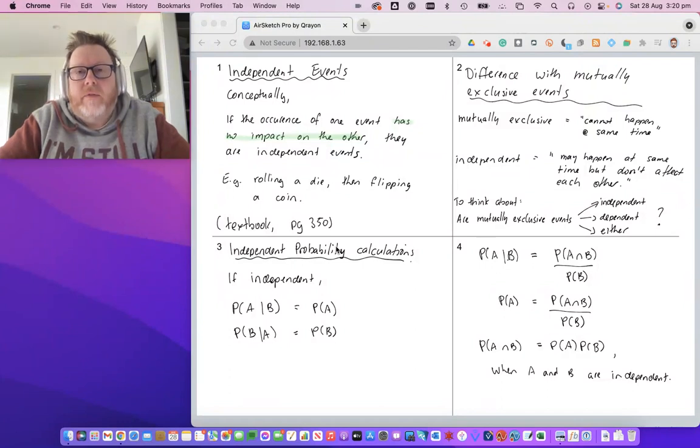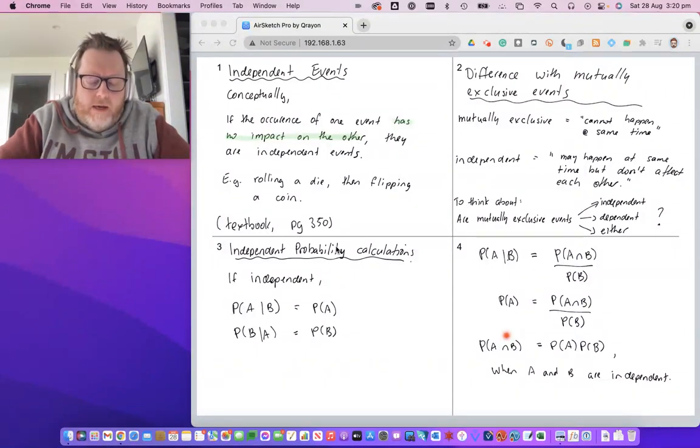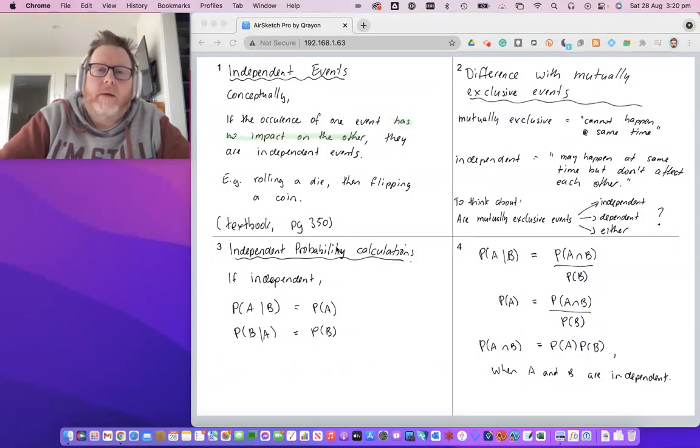And if A and B are independent events, then the probability of A intersect B is probability of A times probability of B.